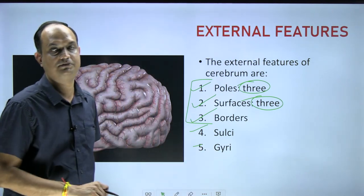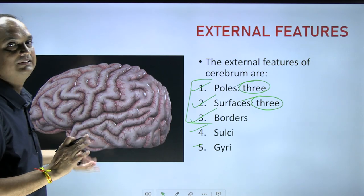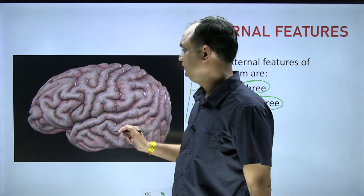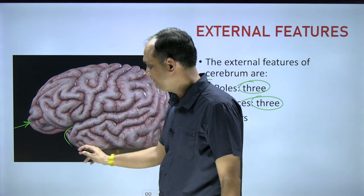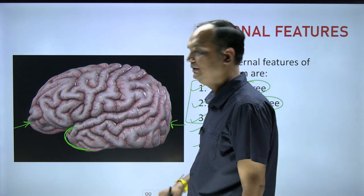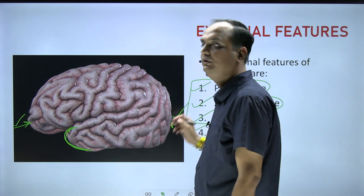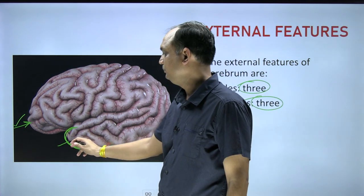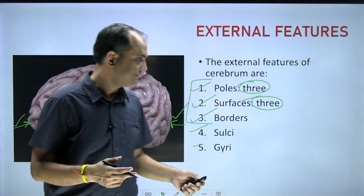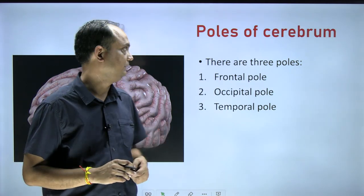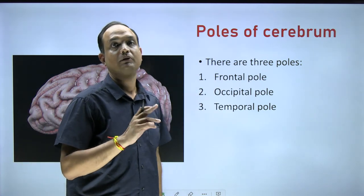When we discuss the poles, there are three poles and three surfaces of a cerebral hemisphere. In this image you can see the cerebrum from the side — this is the anterior end, this is the posterior end, and in the lower area you will find a small part. One pole is the frontal pole, another is the occipital pole, and the third is the temporal pole. Let's discuss each pole one by one.